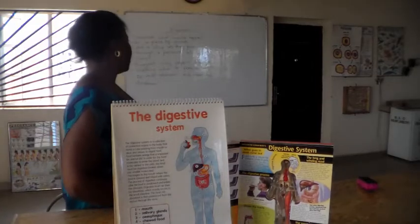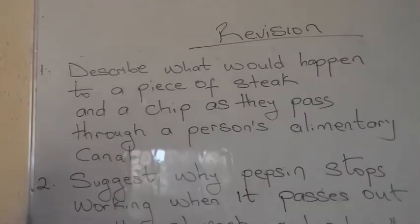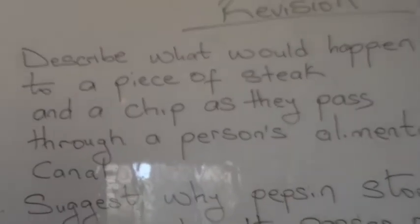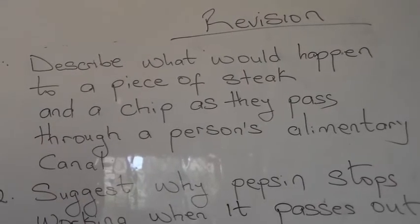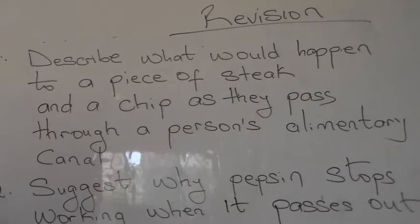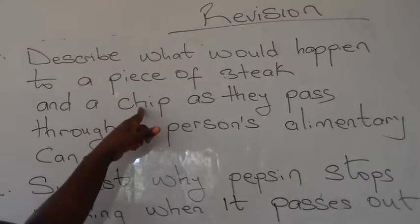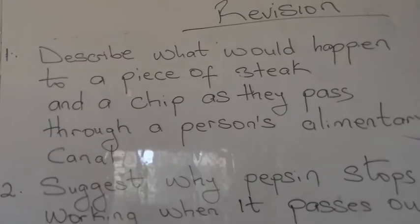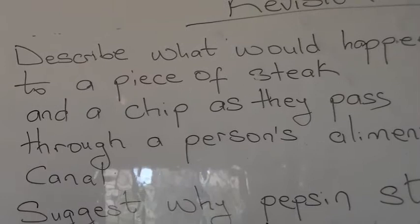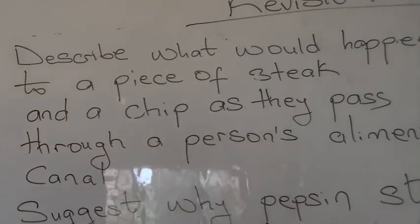Now we look at a question on the board: describe what would happen to a piece of steak and a chip as they pass through a person's alimentary canal. A piece of steak contains protein. A chip — which can be plantain chips or potato chips — contains oil, fat, and also carbohydrates. What are the organs that make up the alimentary canal? The mouth, oesophagus, stomach, small intestine, large intestine, and rectum.